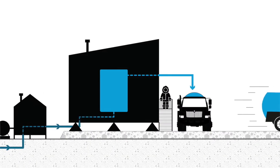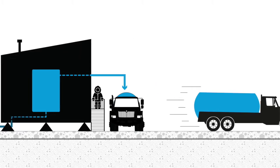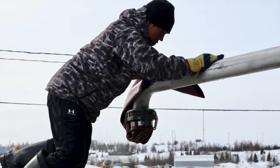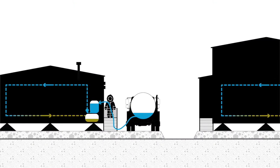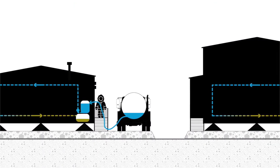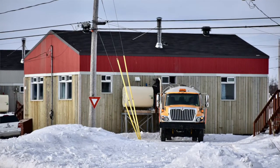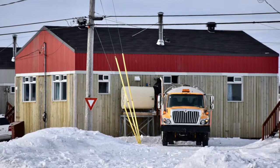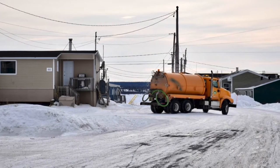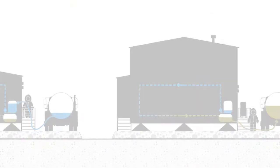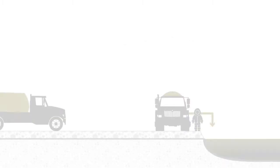The water is first transported from the source to a treatment and pumping station. There, the tank of the truck is filled manually by an employee. The truck then travels through the village to fill the empty tanks of the buildings. For the system to be efficient, the tanker truck must be able to get close to houses, so clearance between constructions must have been planned so that the truck can pass easily. To dispose of the wastewater, another truck is required, and wastewater is pumped into a second truck to be emptied into settling lagoons outside the villages.